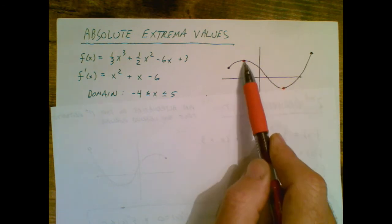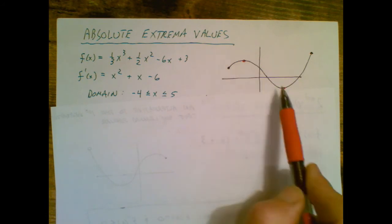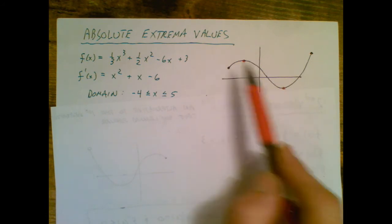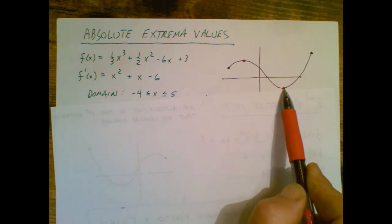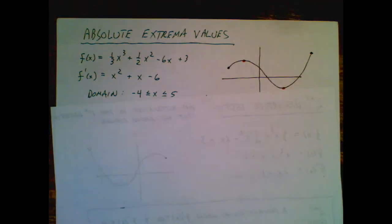This is still a maximum, but it would be called a relative maximum. This is a minimum. This is also a minimum. This is the absolute minimum because it is the lowest minimum. So that's what we're talking about when we talk about absolute extrema values.